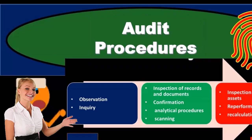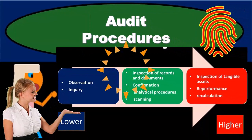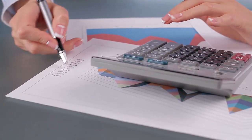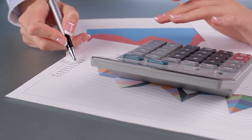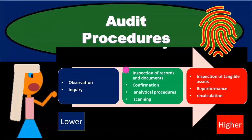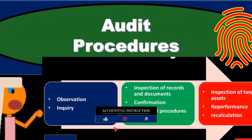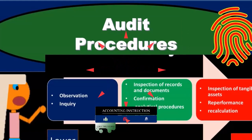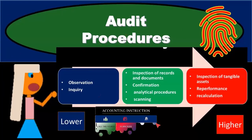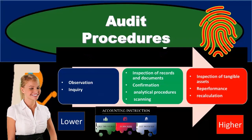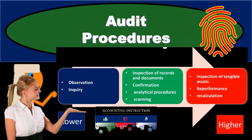As we audit the financial statements, our objective is to give an opinion on the fairness of those financial statements in relation to a set of standards, typically generally accepted accounting standards. To do that, we're going to go through audit procedures, and as we go through those procedures we're going to document that evidence in order to support our opinion. When we start to test specific accounts, it will be more clear what type of audit procedures and assertions would make sense.